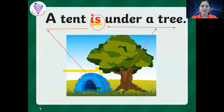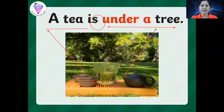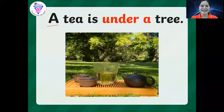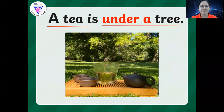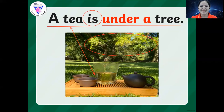Now let's move on. We also have here — let's clear all the drawings. Okay, let's do it one more time. We have here a tea is under a tree. So as you can see, this is a tea and those are trees. The word is is here — this is our sight word. A tea is under a tree. So it becomes a sentence. Good job.